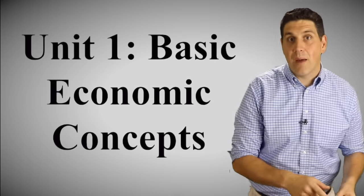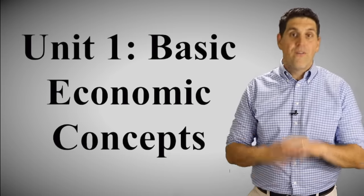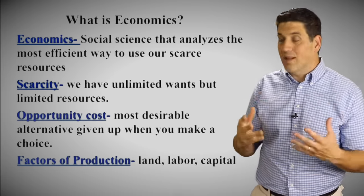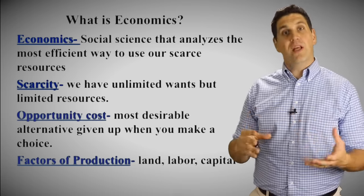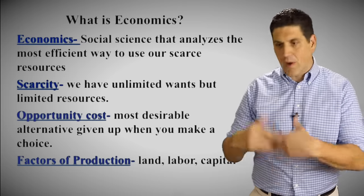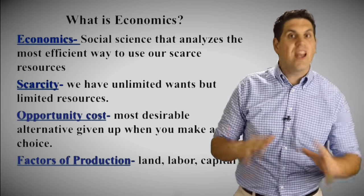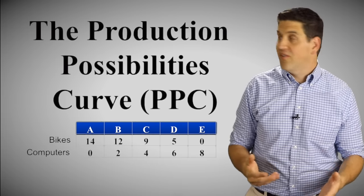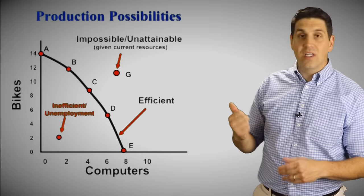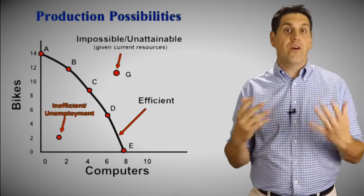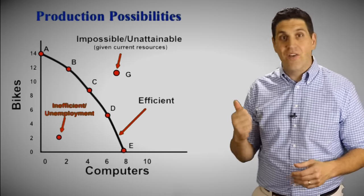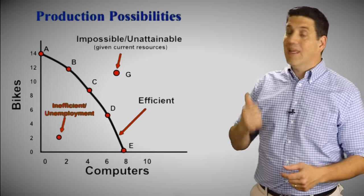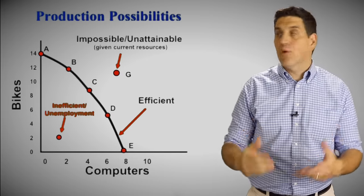Whether you're enrolled in a microeconomics or macroeconomics class, it all starts the same for a basic introductory econ course — with the idea of scarcity. Scarcity means we have unlimited wants and limited resources. You also learn the idea of opportunity cost: everything has a cost. It doesn't matter what you're producing, you have to give up something to produce it. Those concepts come together with the production possibilities curve, the first graph you learn in economics. It shows different combinations of producing two goods using all your resources. Any point on the curve is efficient, any point inside is inefficient, and any point outside is impossible given your current resources.